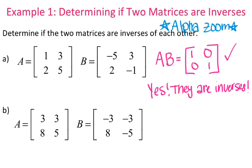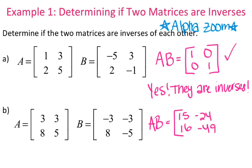If it does not result in the identity matrix exactly — for instance, if this ended up being a negative 1 — then they would not be inverses. For the next one: 3, 3, 8, 5 and negative 3, negative 3, 8, negative 5. Looking at the product, this time when I multiplied it I got 15, negative 24, 16, and negative 49 — not even close to the identity matrix. So that means no, they are not inverses.